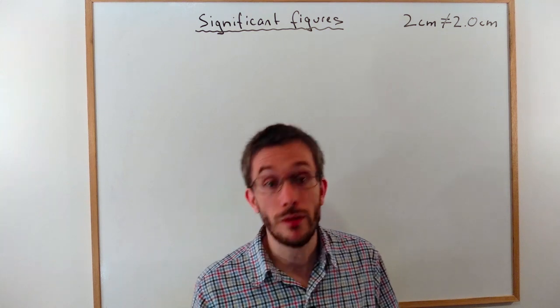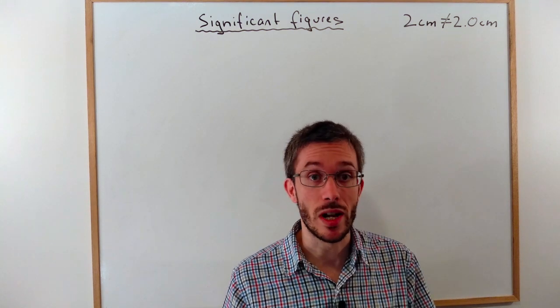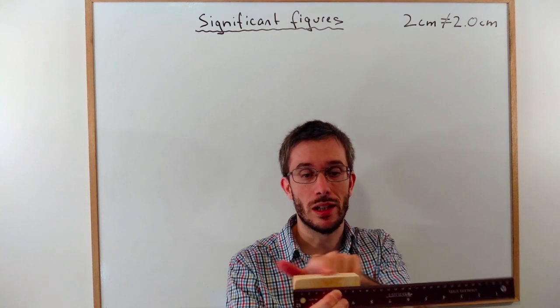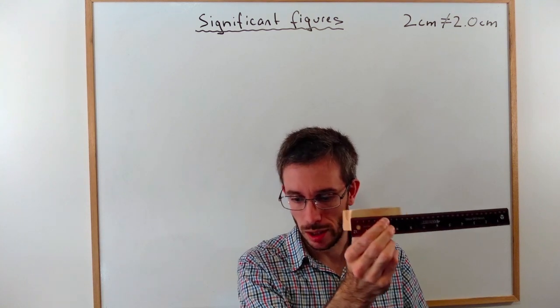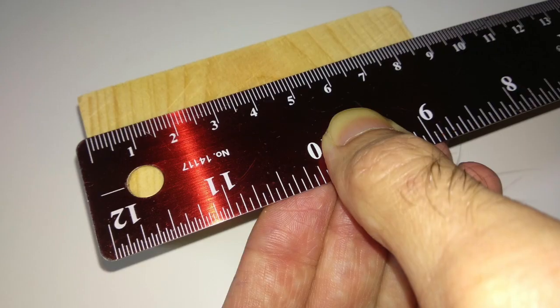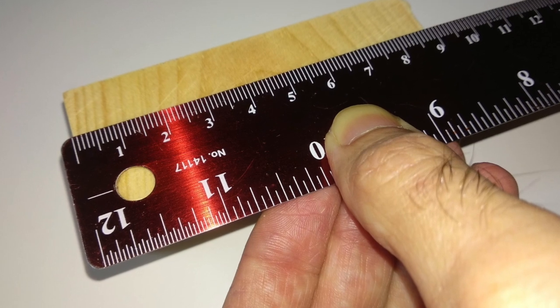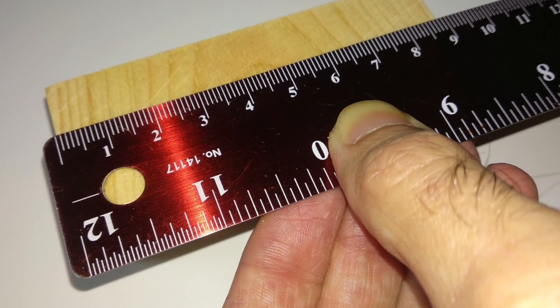As another example, if I use a regular ruler with millimeter increments to measure the length of this block here, then I would get 8.99 cm.